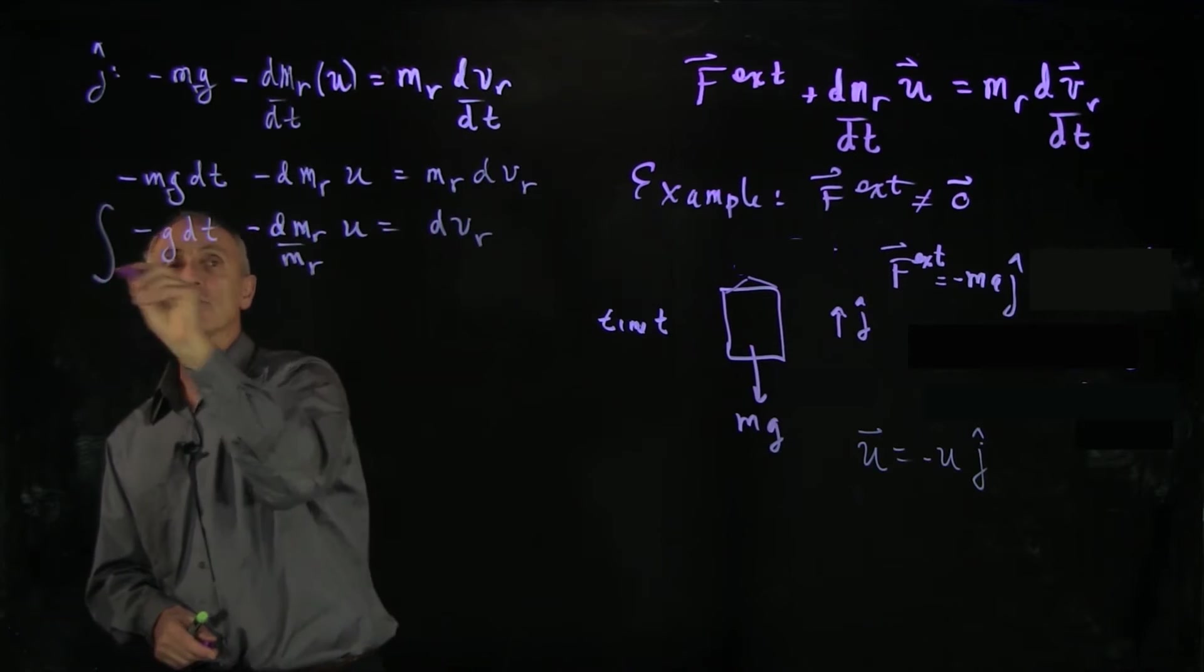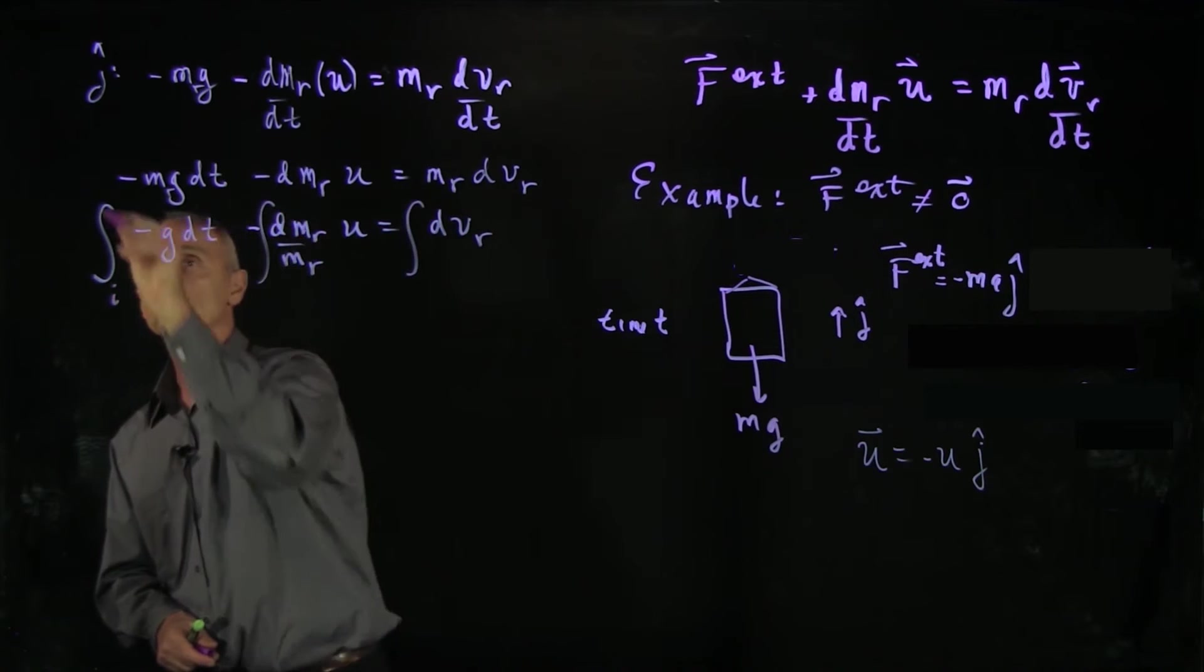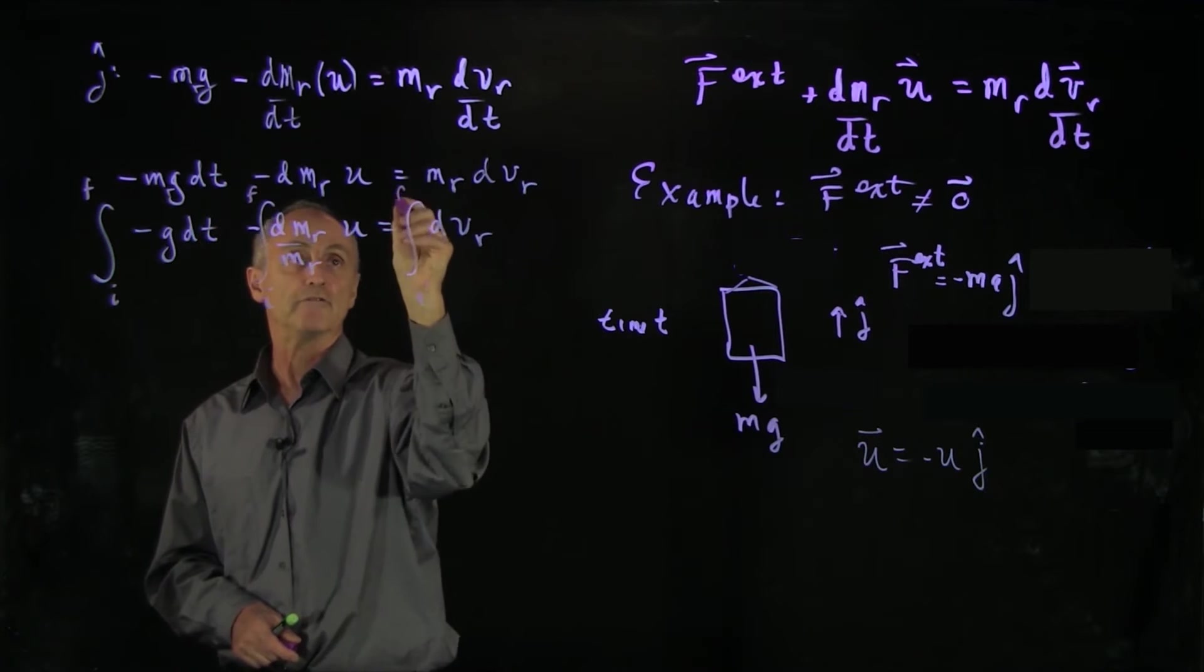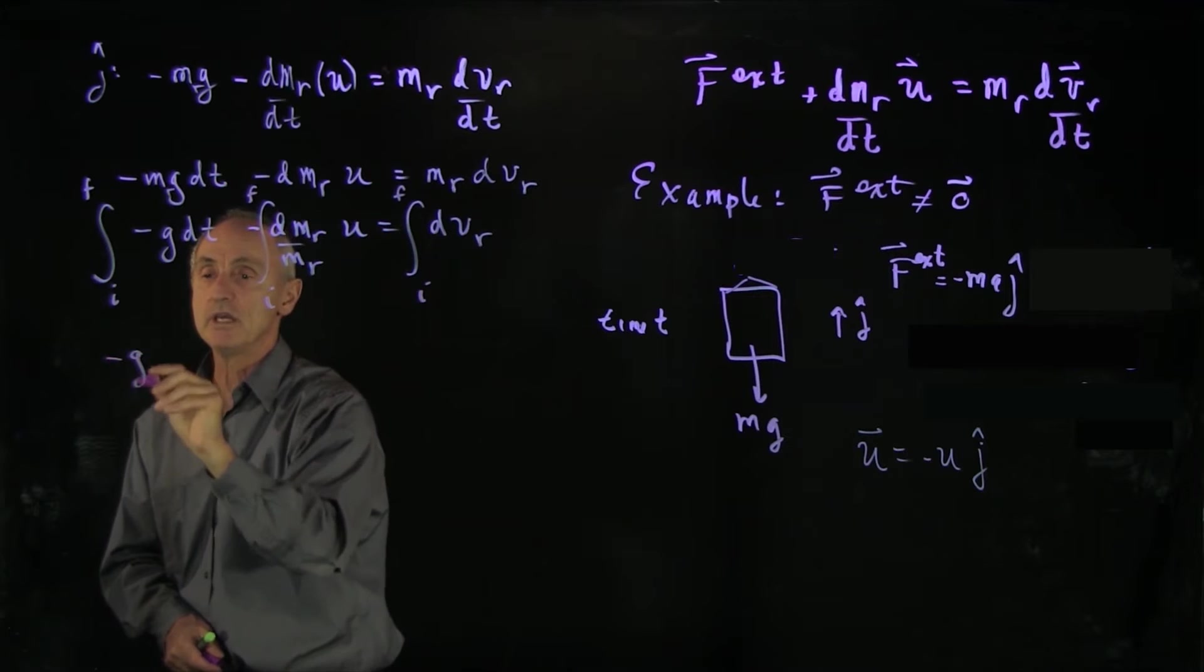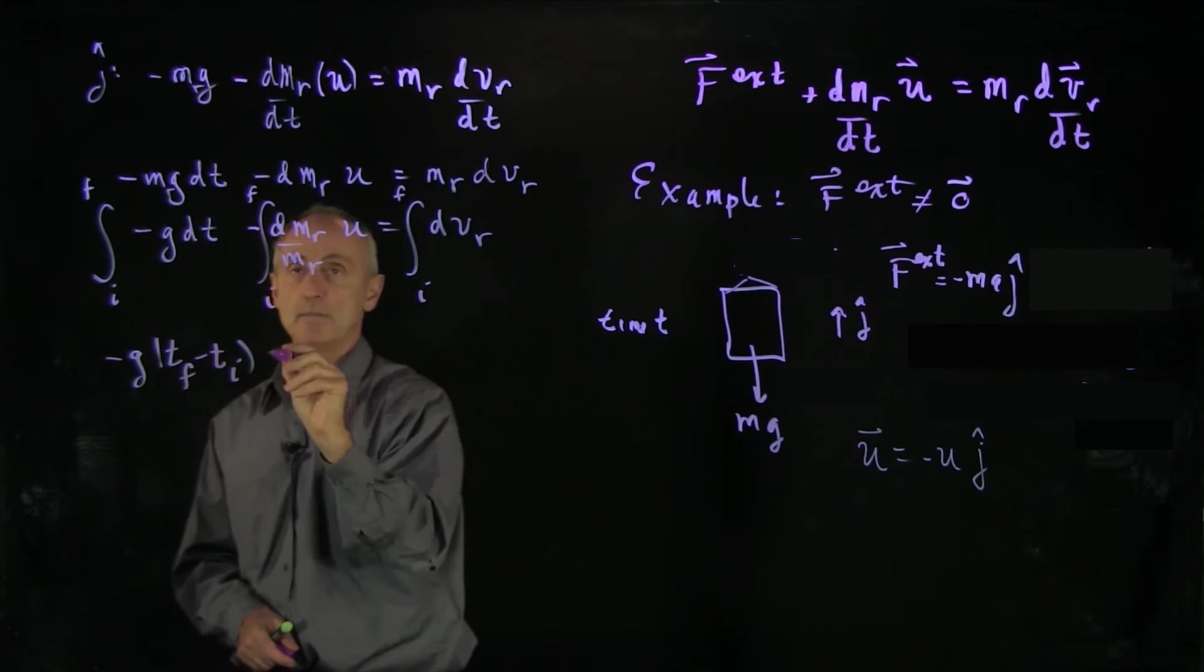And once again, we can integrate this equation from some initial time to some final time. I'll just denote that by i initial and i final. And what we see here is we have minus g times t final minus t initial because we're integrating with respect to time.